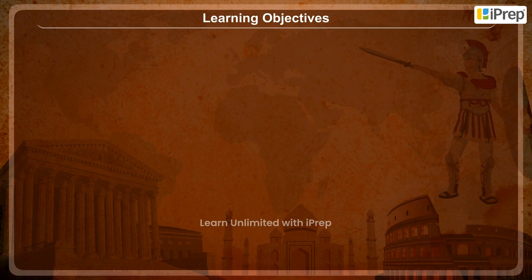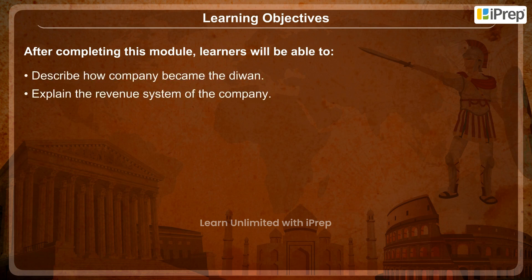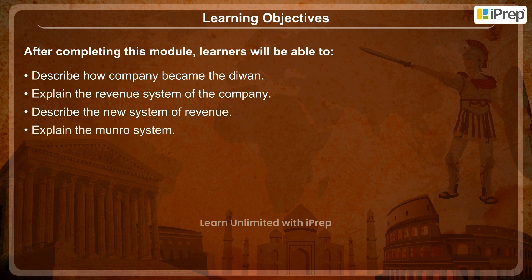Learning Objectives. After completing this module, learners will be able to: describe how the company became the Diwan, explain the revenue system of the company, describe the new system of revenue, and explain the Monroe system.